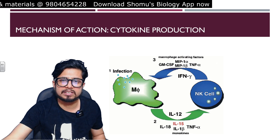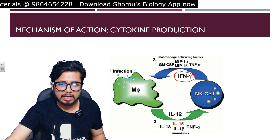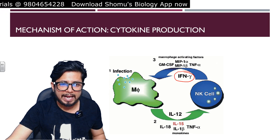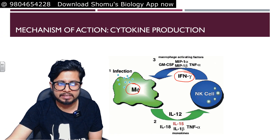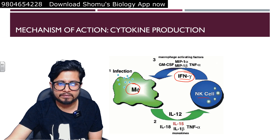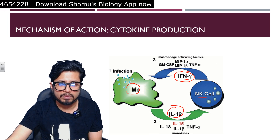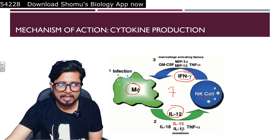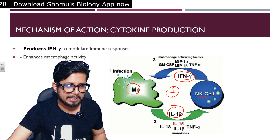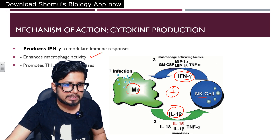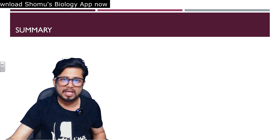Cytokine production is another important role of natural killer cells. NK cells produce interferon-gamma, which activates macrophages. There is a crosstalk between NK cells and macrophages: NK cells release interferon-gamma to macrophages, and in response macrophages release interleukin-12 back to NK cells. This crosstalk activates the adaptive response, enhances macrophage activity, and promotes Th1 helper immune cells to initiate their own response.